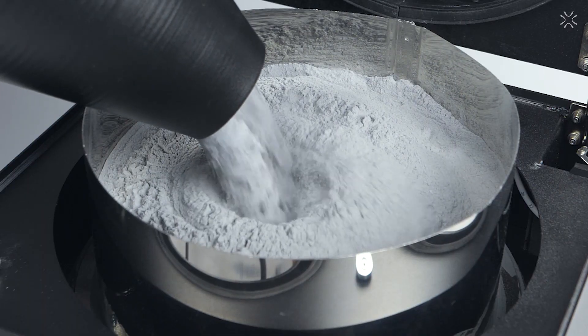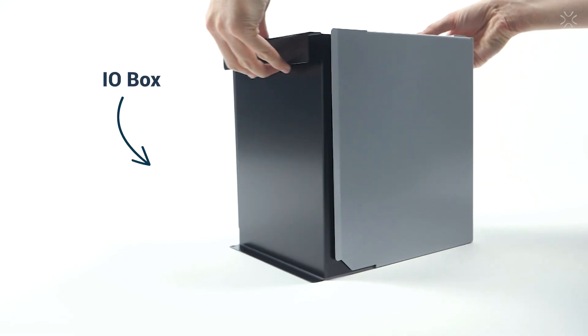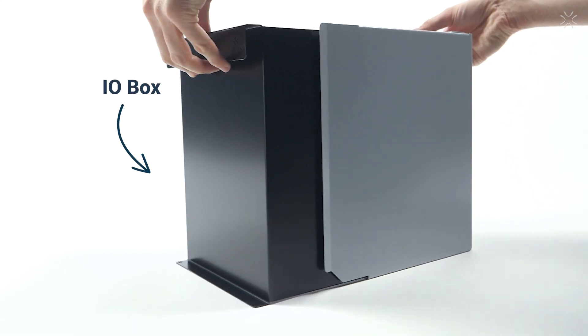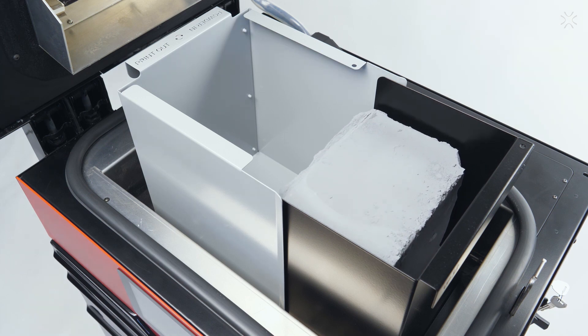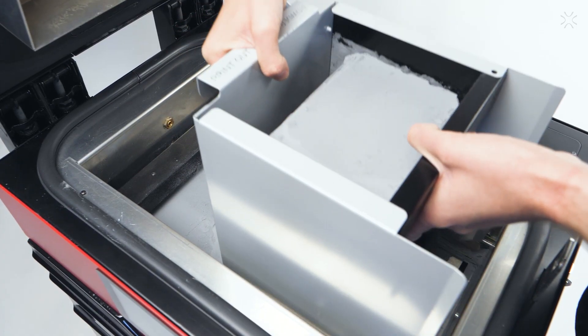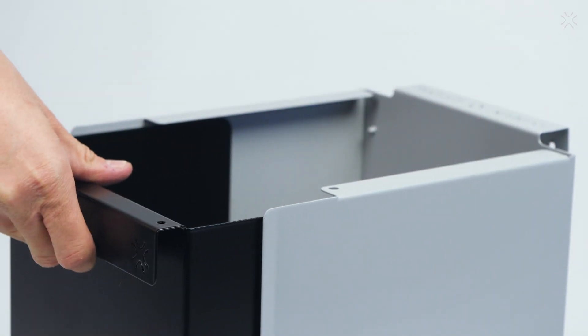While the Centerit funnel was made to keep the powder-in process clean and easy, there is one more tool which makes it even better. The IO-Box was initially designed to take out ready printouts. Now it has one more function. When you turn it around, it can be used as a guide to powder in the printer.